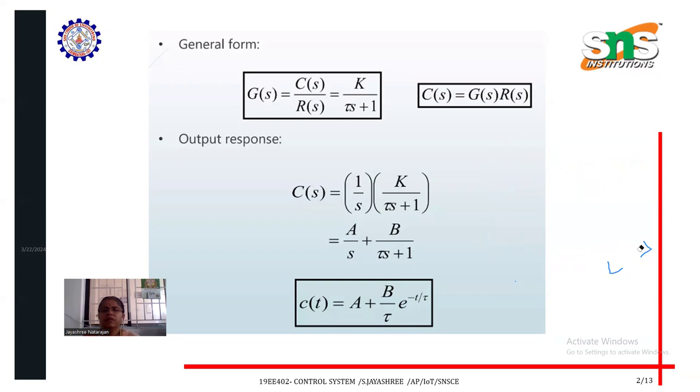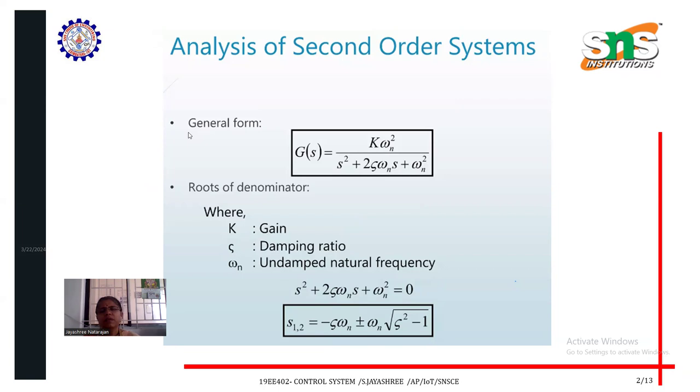Then we discuss upon our second order system. Look into the general form of second order system. G of s equals K omega n squared divided by s squared plus 2 zeta omega n into s plus omega n squared. Here omega n is undamped natural frequency. Zeta is damping ratio. K is gain.